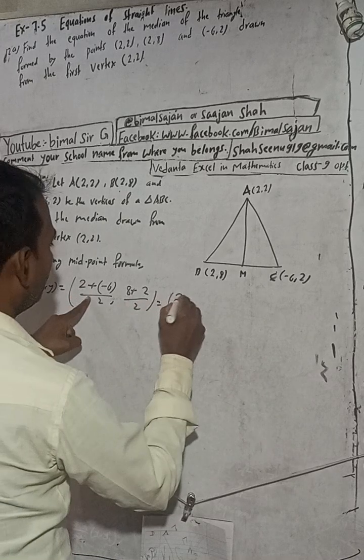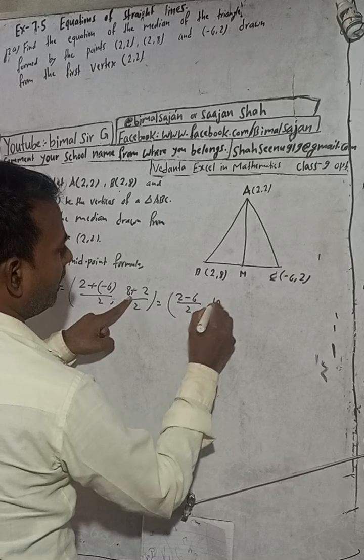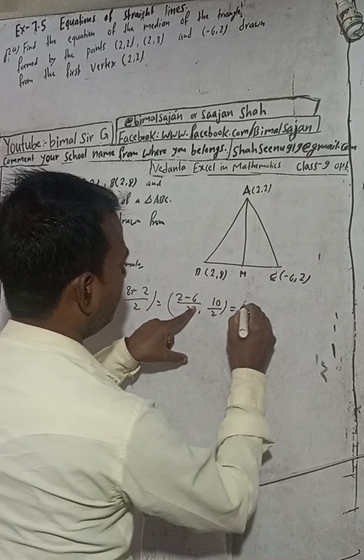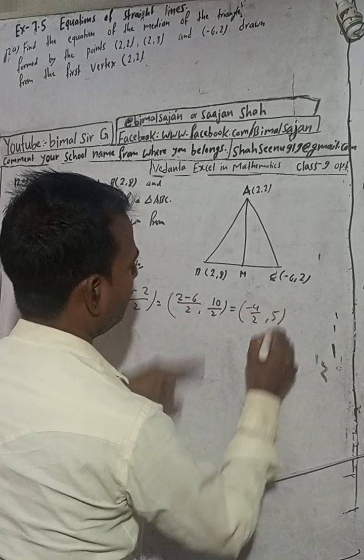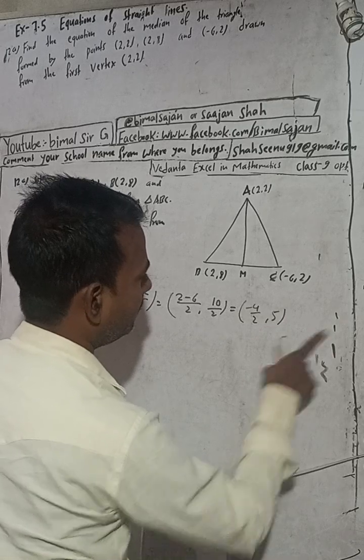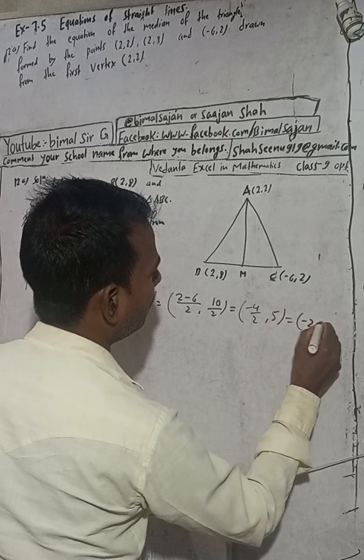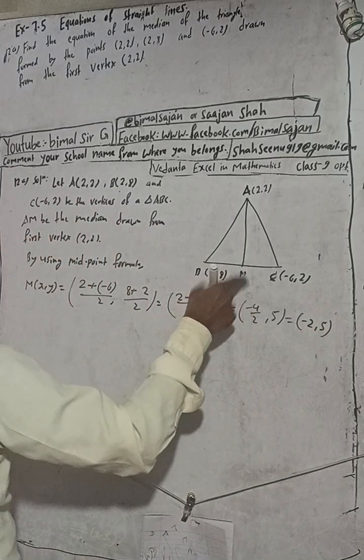So, this is equal to -4 by 2, which is -2 comma 5. This is the midpoint M(-2, 5).